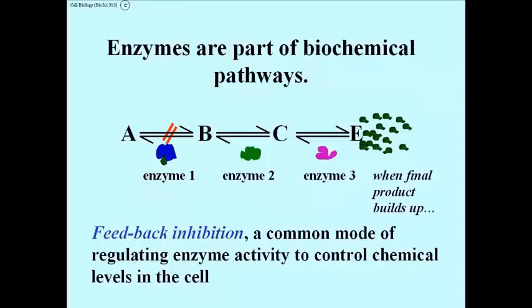It is a reversible phenomenon so that when levels of E drop because the cell is using it for some purpose, the E molecule that is bound to enzyme 1 would actually come off and then the pathway could resume at full speed.